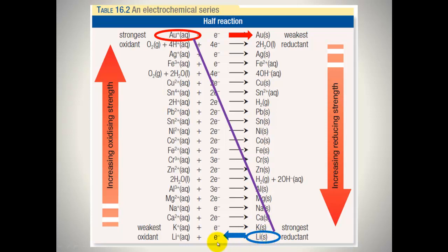You've got one of the strongest oxidants, gold ions, reacting with lithium solid. Lithium solid undergoes oxidation to produce one electron plus lithium ions. It gives that electron to gold ions to form gold solid — an oxidant reacting with a reductant below it on the right hand side.